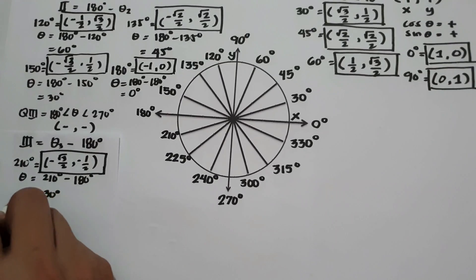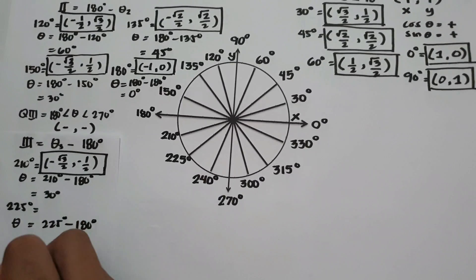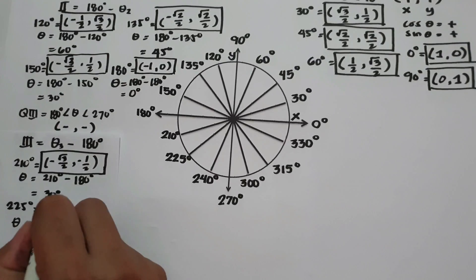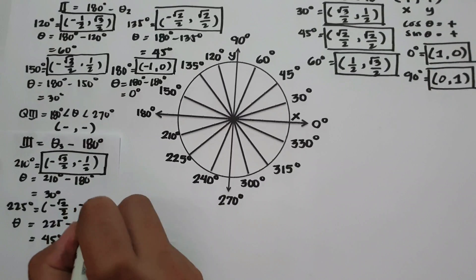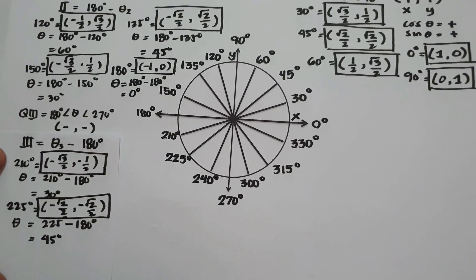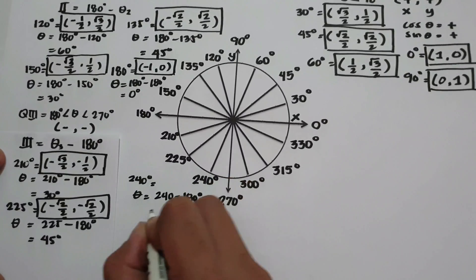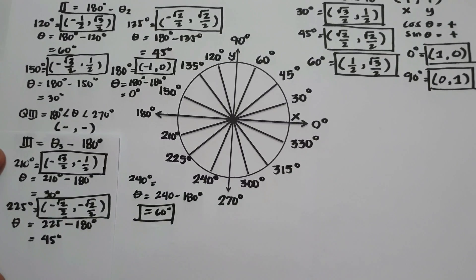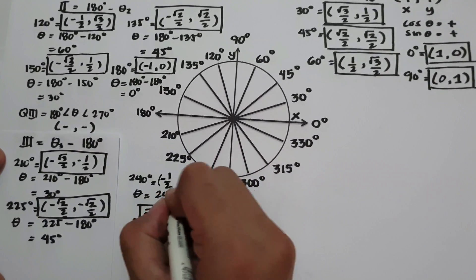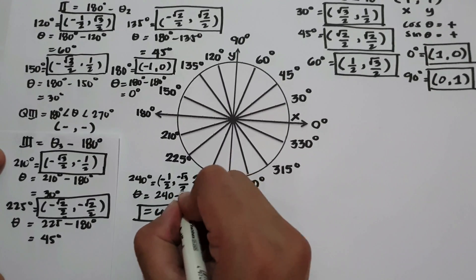What about 225 degrees? The reference angle is 225 degrees minus 180 degrees, which is 45 degrees. The coordinates of 225 degrees are: cosine 45 in quadrant 3 is negative square root of 2 over 2, and sine 45 is also negative square root of 2 over 2. How about 240 degrees? The reference angle is 240 minus 180 degrees, which is 60 degrees. Cosine 60 in quadrant 3 is negative 1 half, and sine 60 in quadrant 3 is negative square root of 3 over 2.